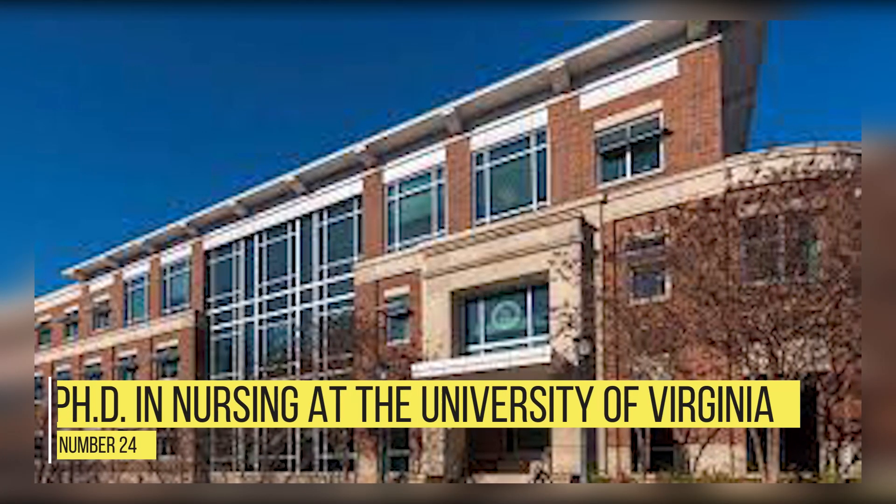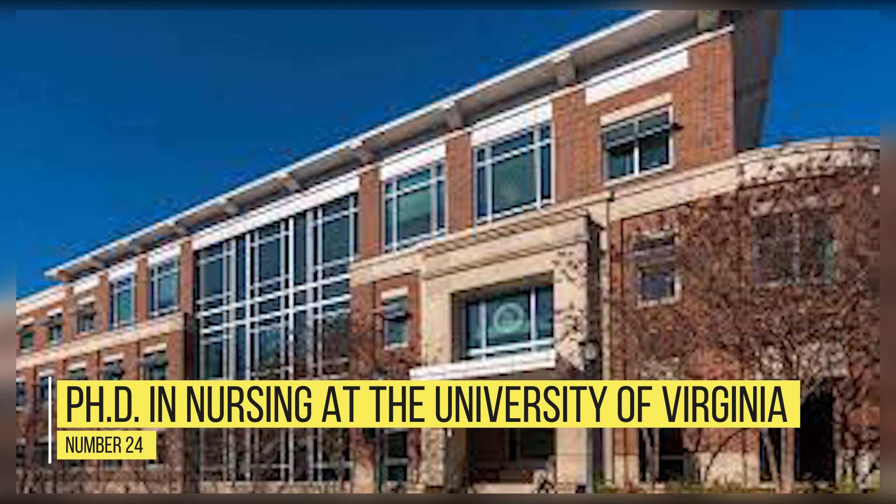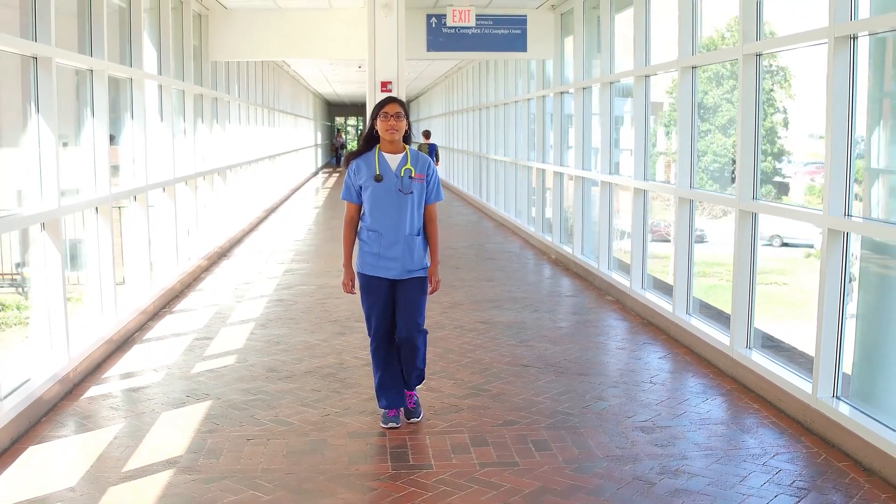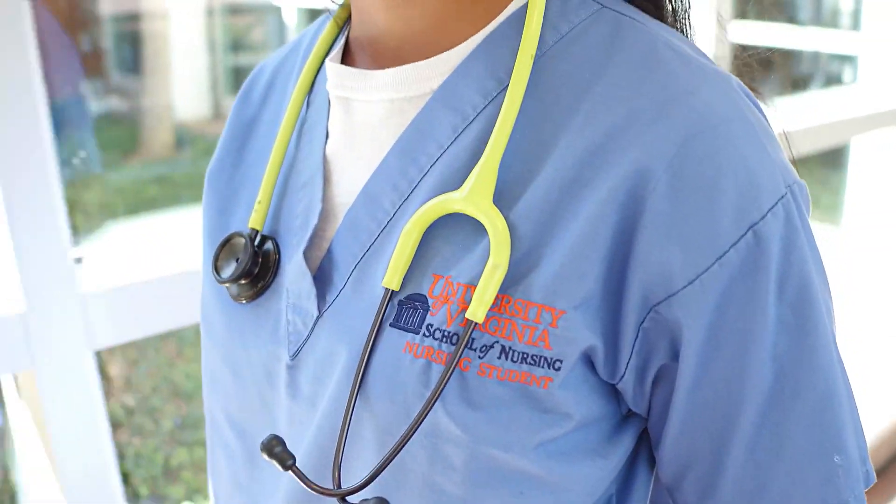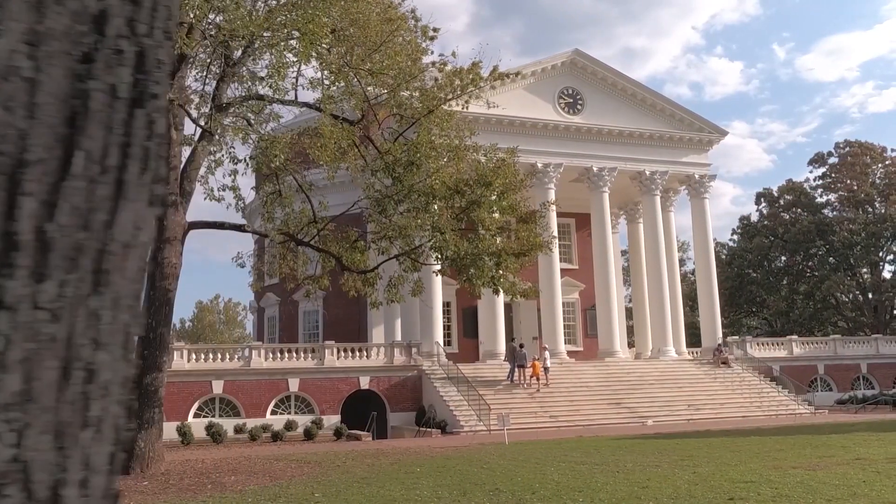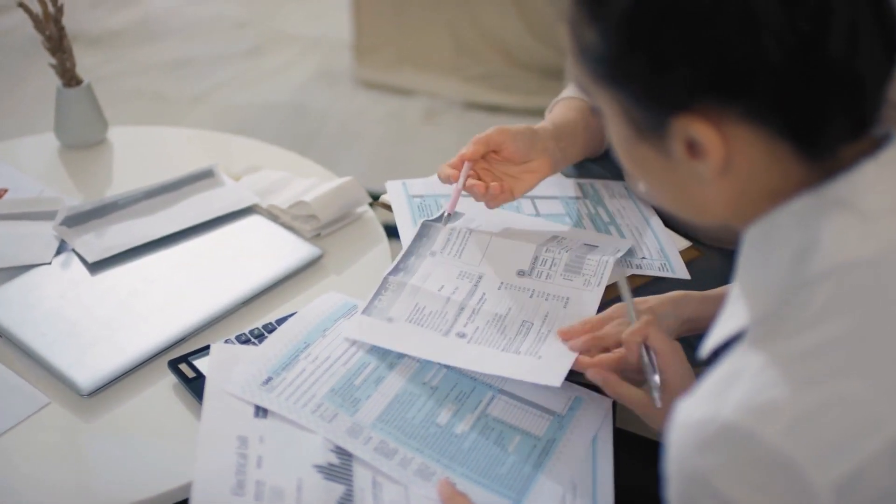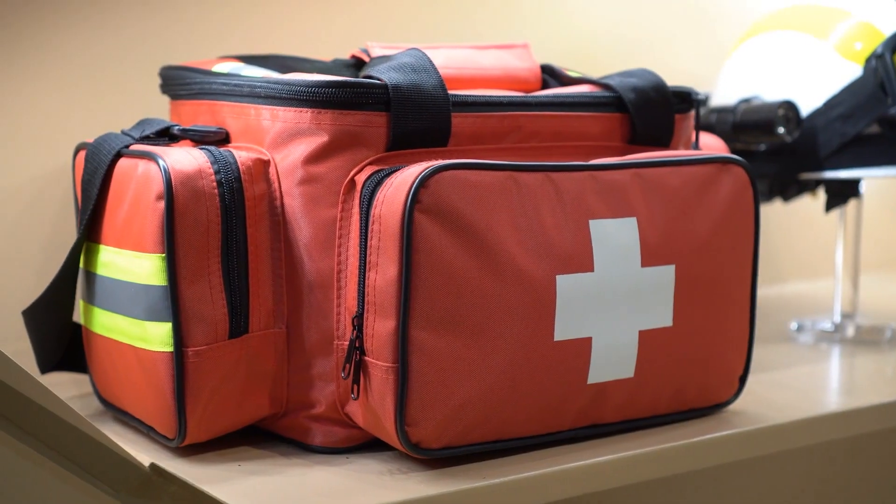Number 24: PhD in Nursing at the University of Virginia. All students admitted to the University of Virginia's PhD in Nursing program are eligible for four years of scholarship funding to cover tuition, insurance and fees, and annual stipends. To receive certain aid, students must work 10 hours per week as a graduate teaching assistant.